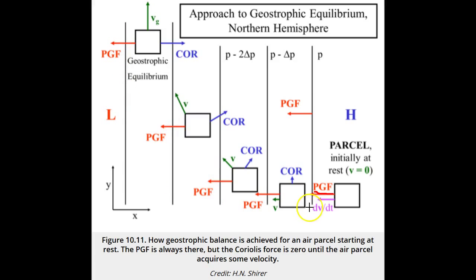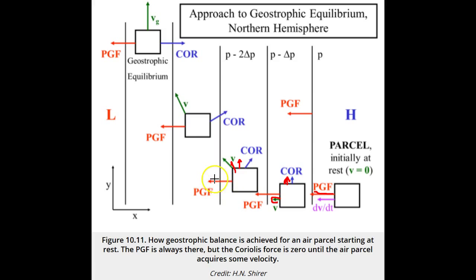As soon as the parcel has some velocity, the Coriolis force starts perpendicular and to the right of velocity in the northern hemisphere. The Coriolis force begins to move the parcel to the right because the sum of forces on the parcel now has a y component. Note that the PGF is still always perpendicular to the pressure gradient, and the Coriolis force is always perpendicular to the velocity.